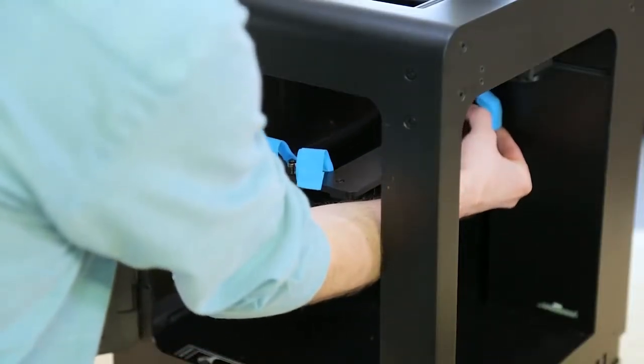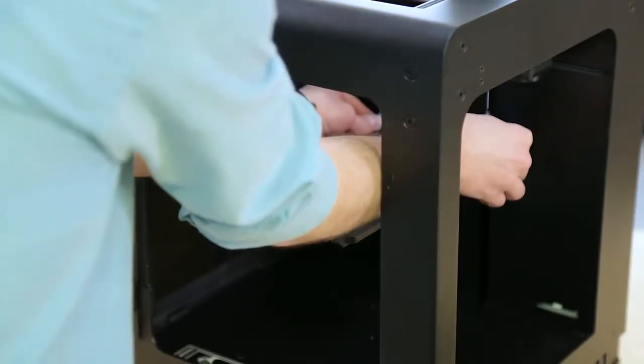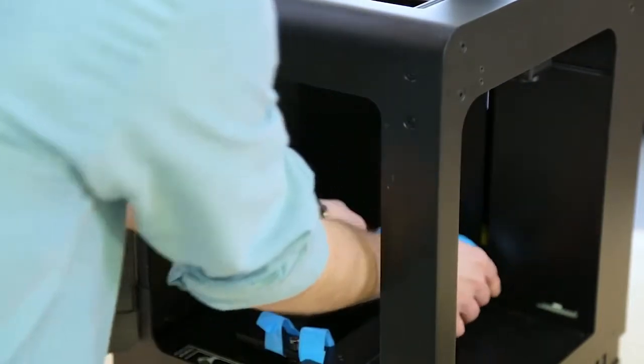After you cut everything out, you can lower the heat bed mount by pressing on these distinct points. Remove the safety tapes.